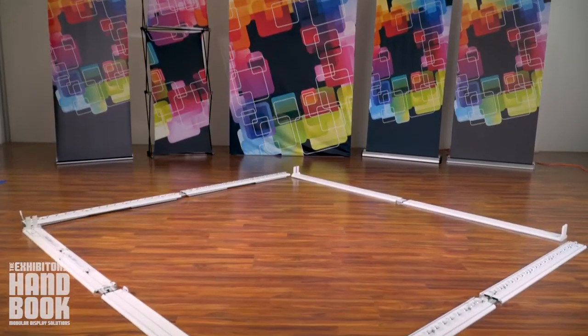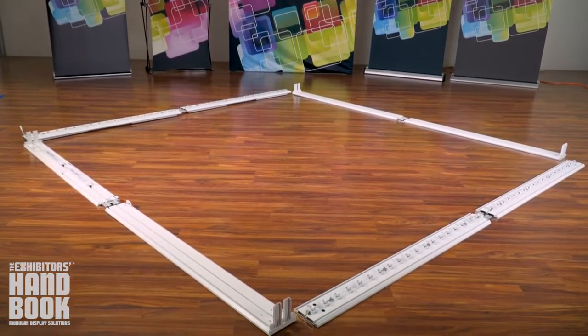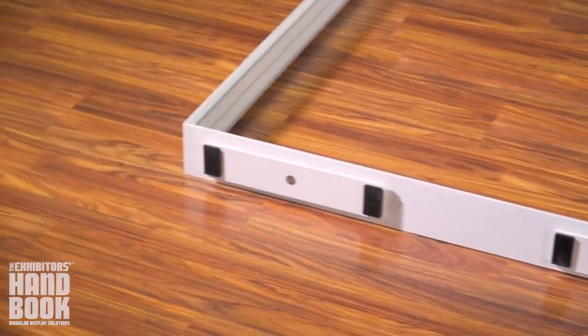First unpack the reusable packaging and place the parts on the ground. The first piece to grab is the base of the display. You will be able to tell the difference between the base and the top of the display by the locking swivel feet.